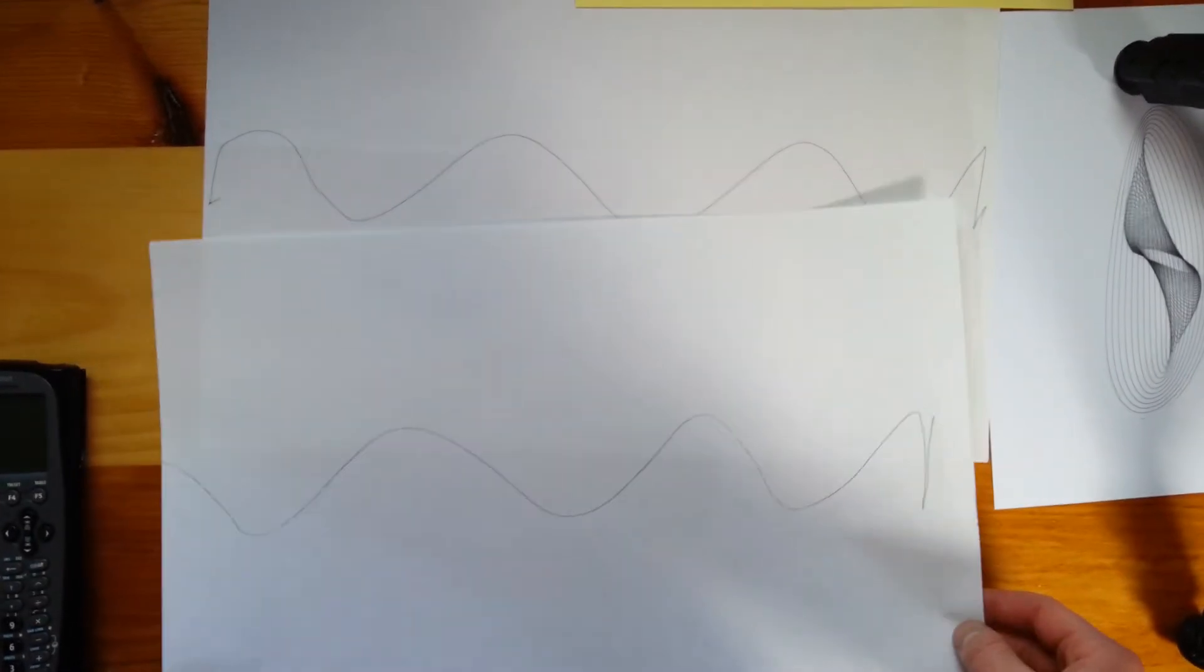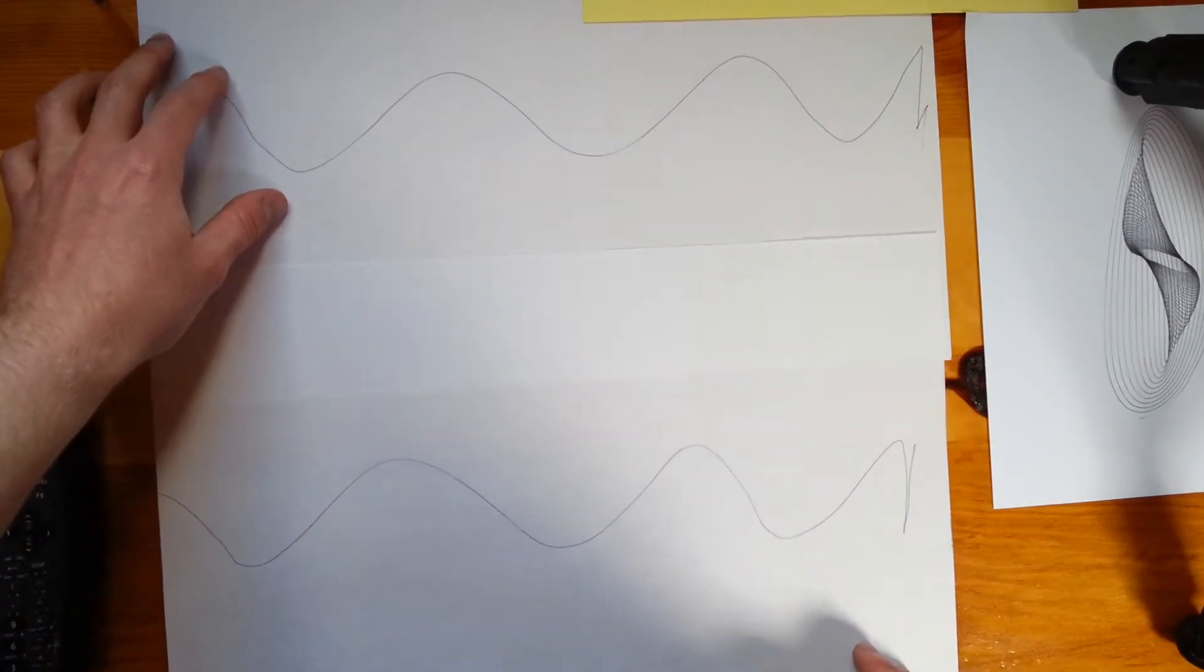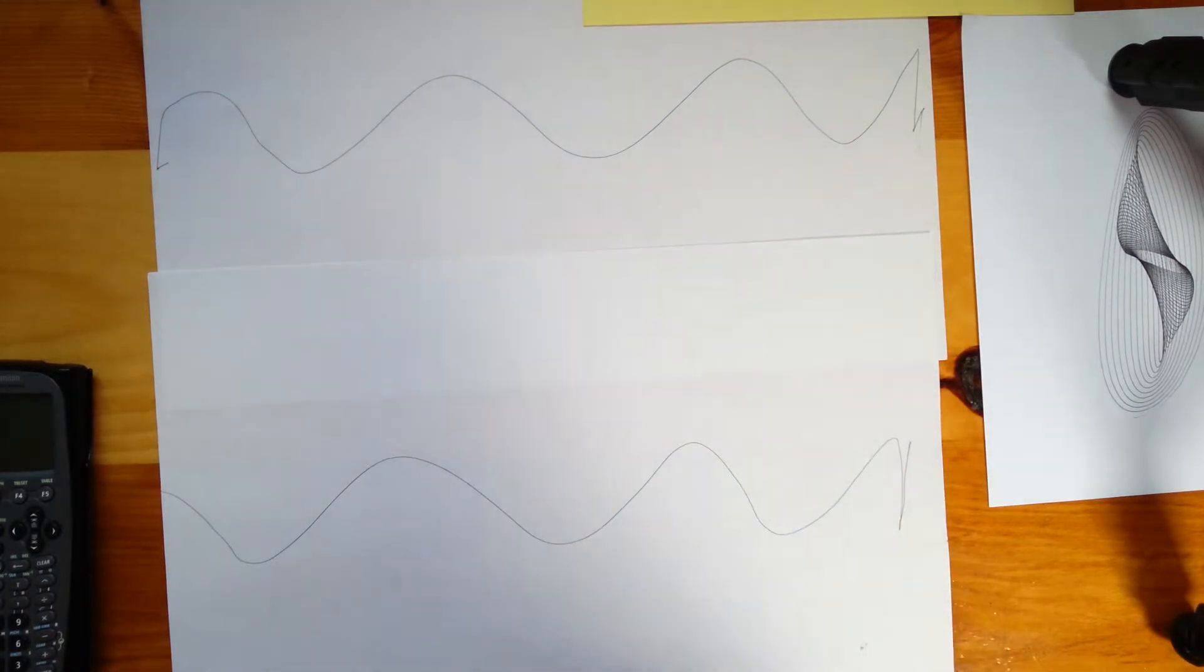Alright, so here's what we just did. Add two of them, actually. And you can see with one pendulum, you trace out a sine wave as the paper moves by.